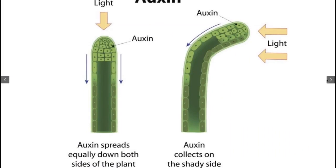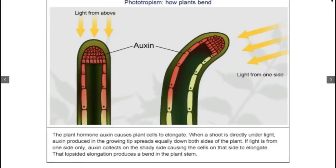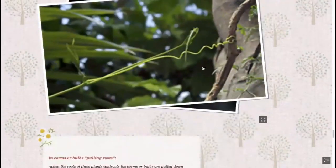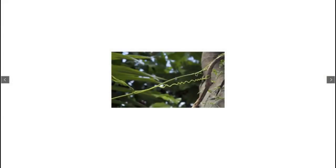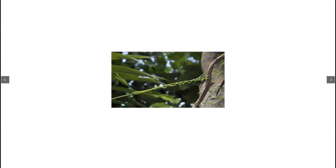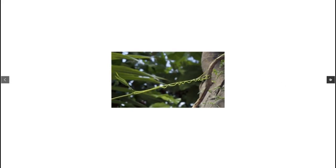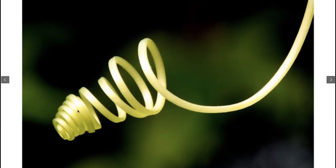On the side facing the solid object, slow growth occurs, and on the side away from the solid object, accelerated or faster growth occurs. This auxin distribution causes the twining spiral shape. If the tendril doesn't meet a support during its movement, it will wilt and die - the plant will collapse and die if it doesn't find anything to grow upward on.